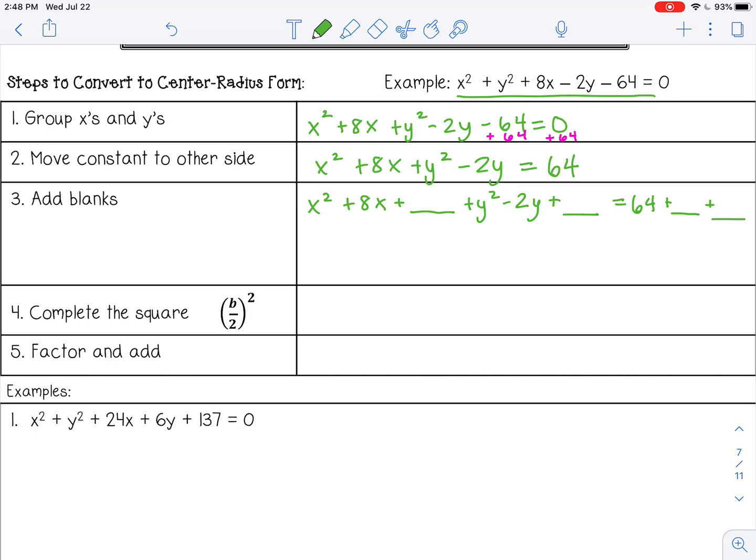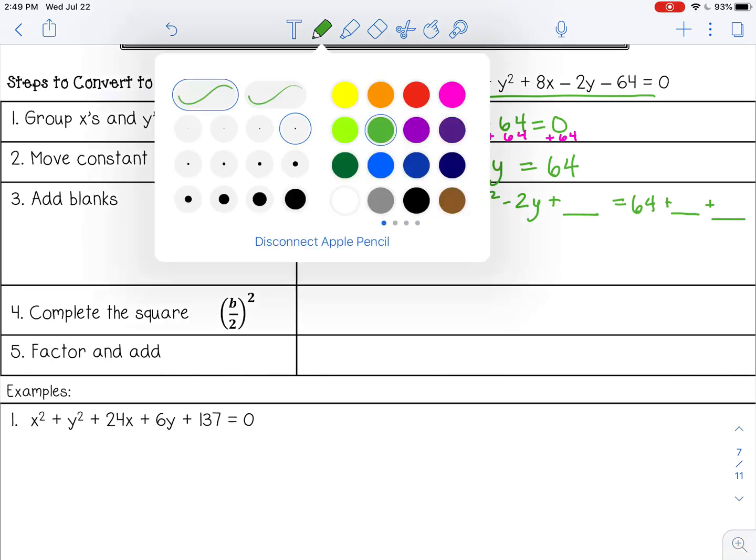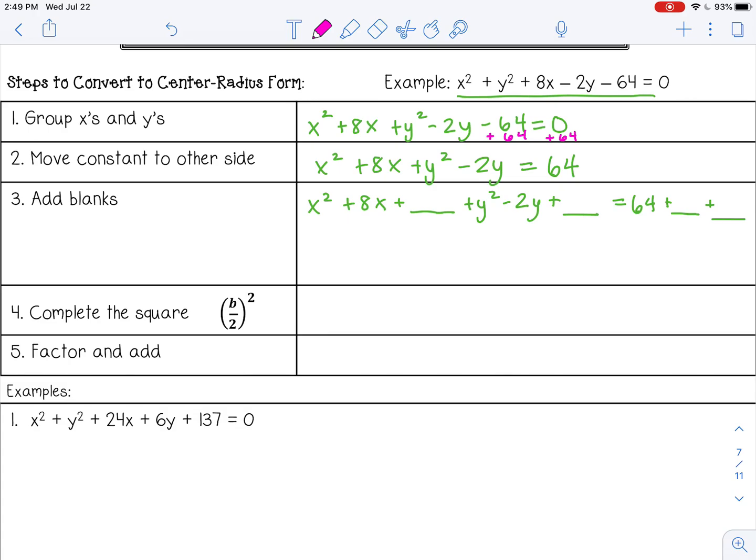Next I'm going to complete the square. If you remember from Algebra 1, when you have a trinomial ax squared plus bx plus c, you can complete the square and find the c value, which is what we're missing here, by taking half of b and squaring it. So I'm going to take half of 8 and square it. That would be 4 squared, which is 16. I'm going to put that here and here.